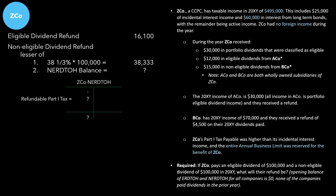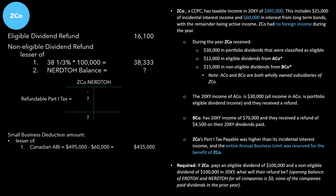A great place to start is to consider the small business deduction amount for ZEDCO — the amount of income sheltered by the small business deduction. The small business deduction amount is the lesser of three items. First, Canadian active business income: $495,000 total taxable income minus $60,000 in interest from long-term bonds equals $435,000 of active business income, because the incidental interest income of $25,000 is considered incidental and still active.